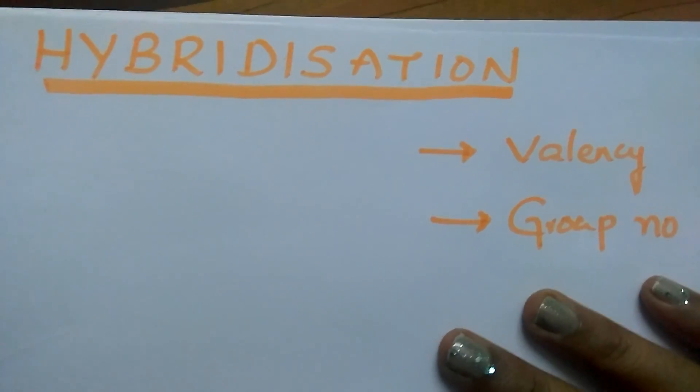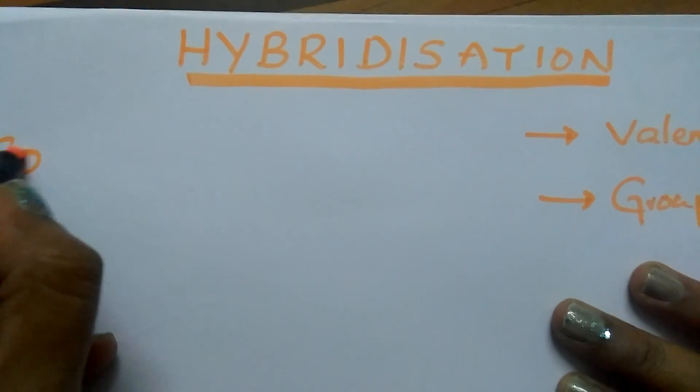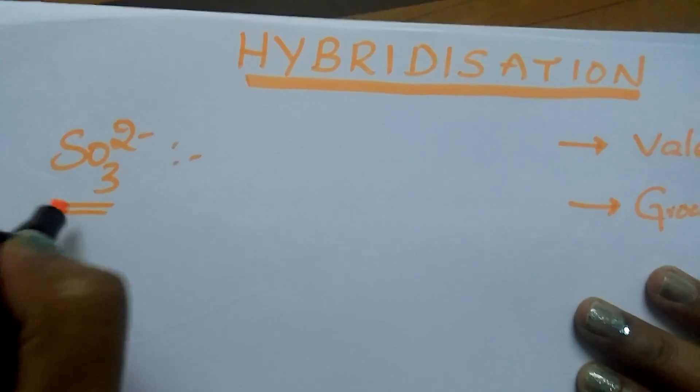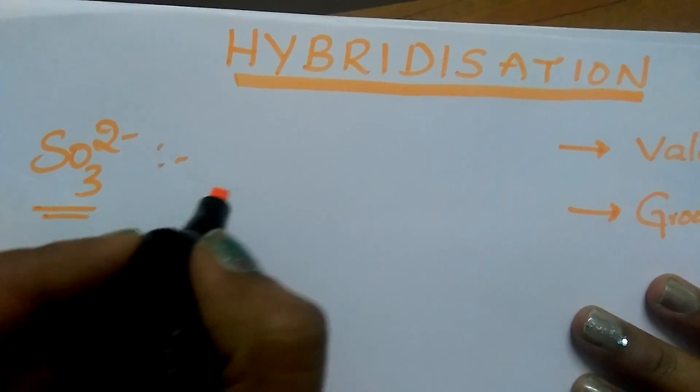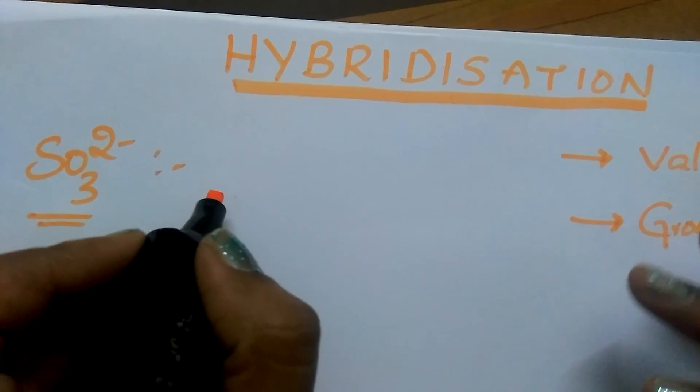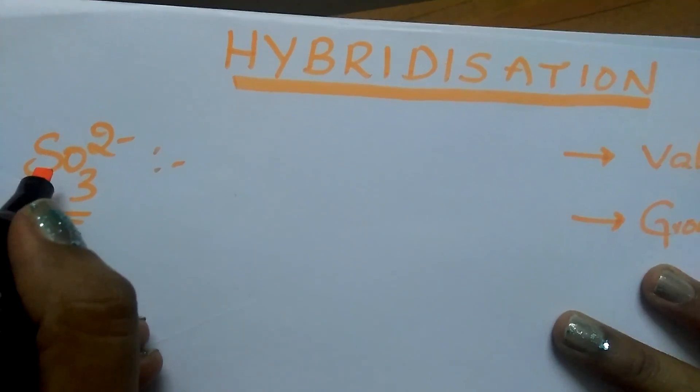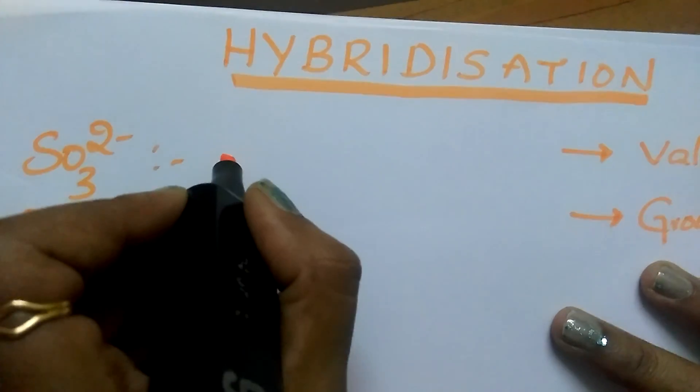Let us try to find the hybridization for SO3 2-. It is really difficult for students after seeing a molecule, but now I am going to make it so easy. Central atom is sulfur and it belongs to the 6th group, so the number of valency electrons are 6.